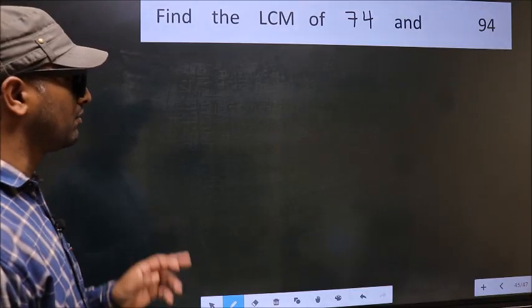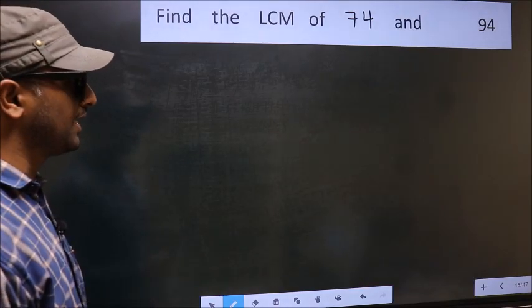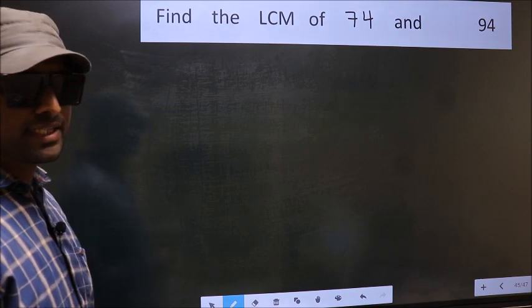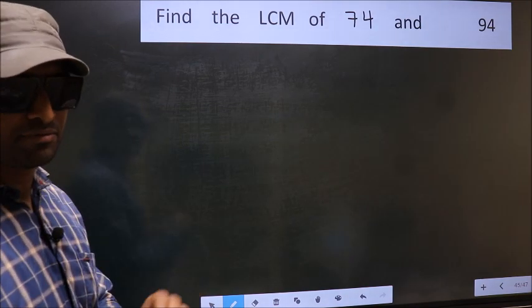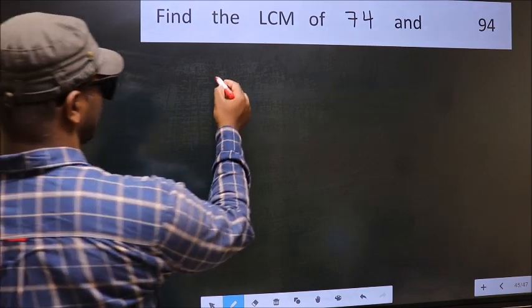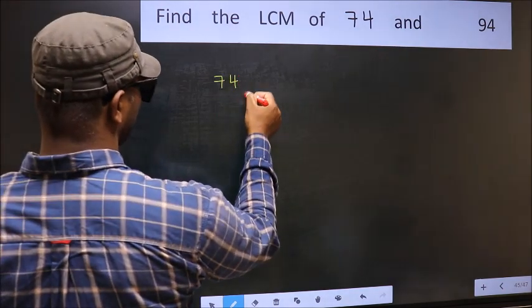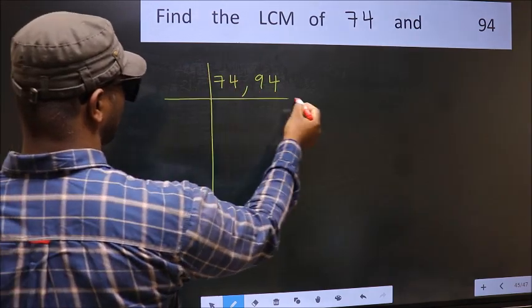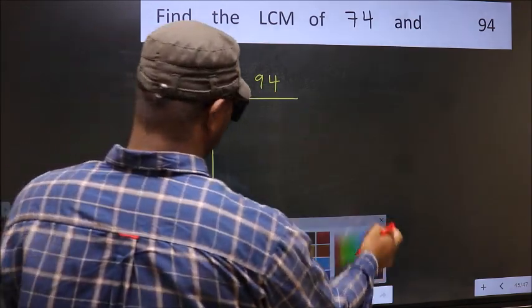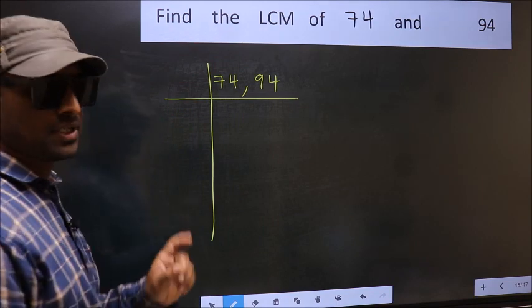Find the LCM of 74 and 94. To find the LCM, we should frame it in this way: 74, 94. This is your step 1.